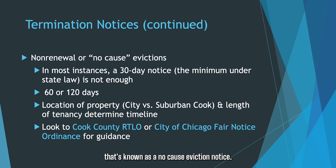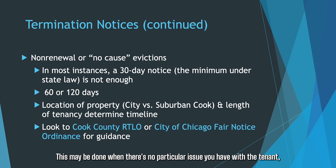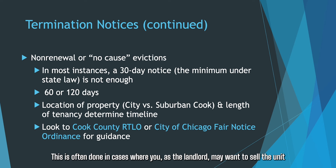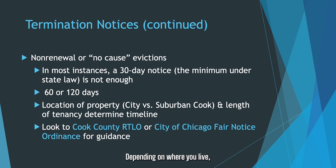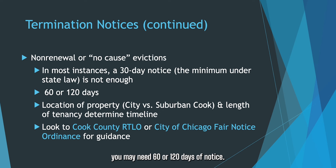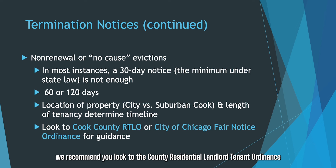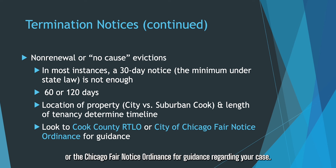That third type is known as a no-cause eviction notice. This might be done when there's no particular issue you have with the tenant, but you would still like them to move out of the property — often in cases where you as landlord may want to sell the unit or move into it yourself. Often in these types of cases a 30-day notice is given, but often this is not enough notice. Depending on where you live and how long the tenant has lived in the unit, you may need 60 or 120 days of notice. For specific guidelines, we recommend you look to the Cook County Residential Landlord-Tenant Ordinance or the Chicago Fair Notice Ordinance.